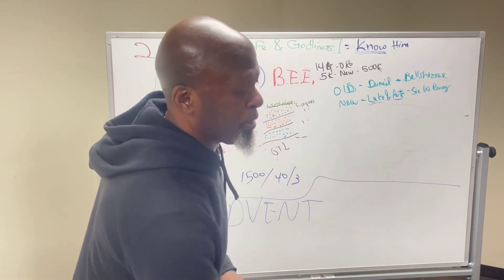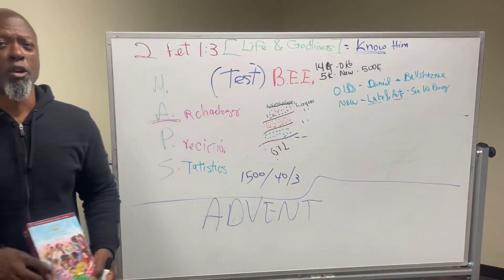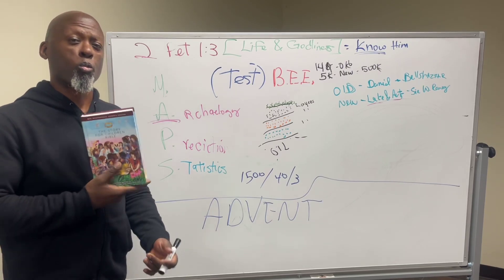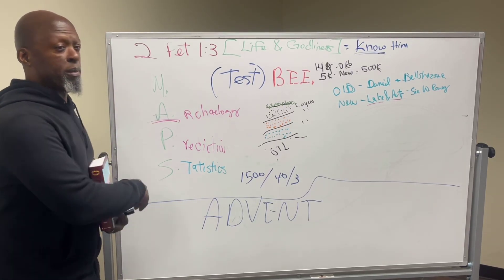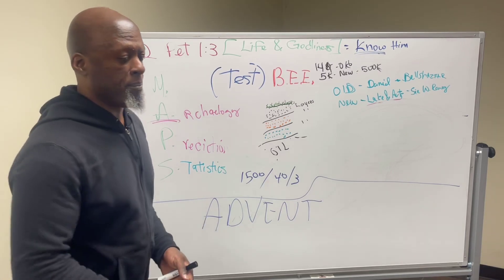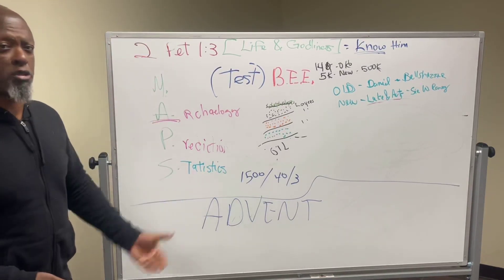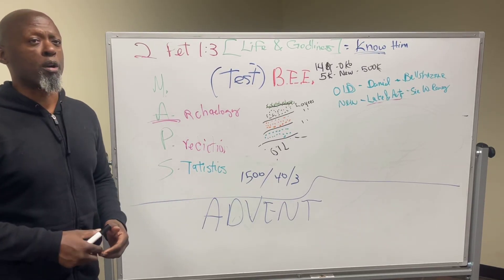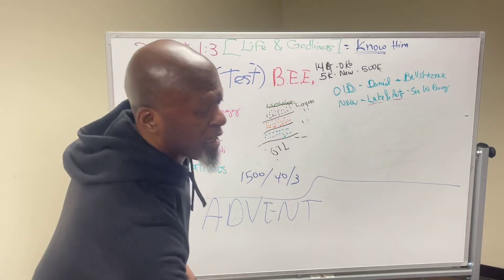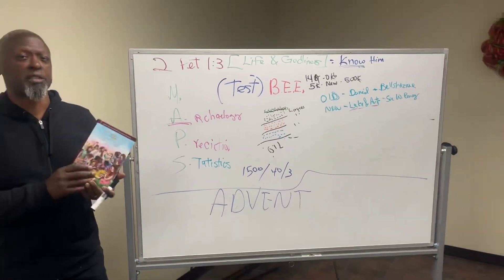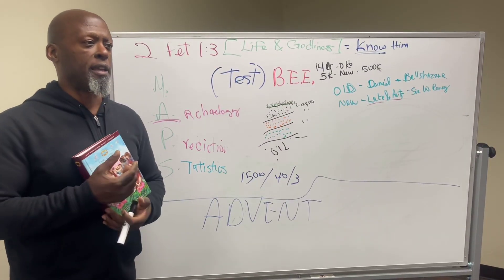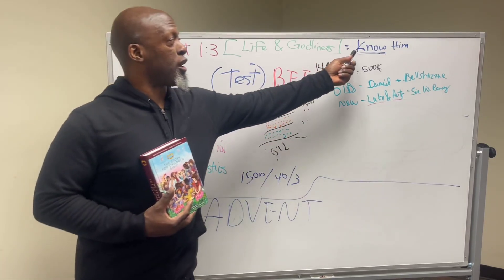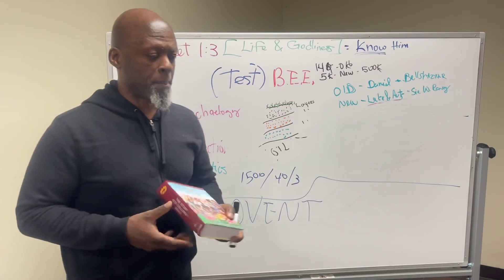I'm not expecting my young people to be textual critics or grammarians. But when their beliefs are challenged based on the Bible, I do want them to remember this acronym — MAPS — and to be able to talk about the manuscript evidence, archaeological support, predictive prophecy, and statistical support. Together these give us confidence that the Bible is divine rather than human in nature, and that we can trust it for life and godliness as long as we have a relationship with him through his Holy Spirit.